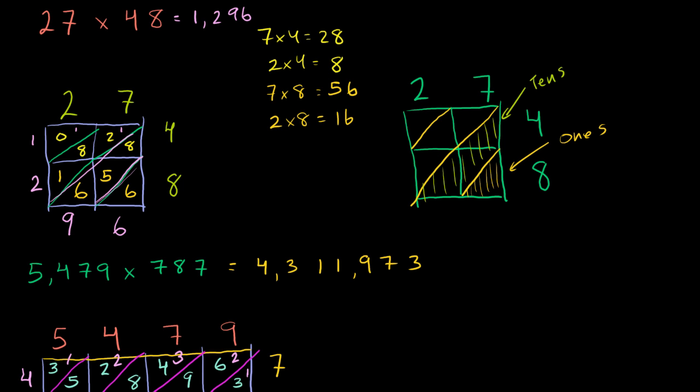Now the next diagonal to the left or above that, depending on how you want to view it, I'll do it in this little pink color right here. You could guess. That's going to be the hundreds place. And then finally we have this little diagonal there, and I'll do it in this light blue color. That is the thousands place.